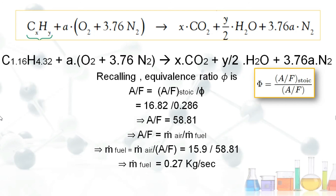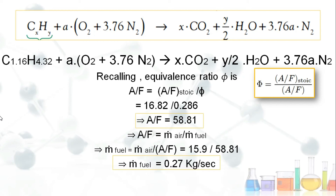Solving, ṁ_fuel = 15.9 / 58.81 = 0.27 kg/s. We have obtained both required answers: the air-fuel ratio is 58.81 and the fuel mass flow rate is 0.27 kg/s.